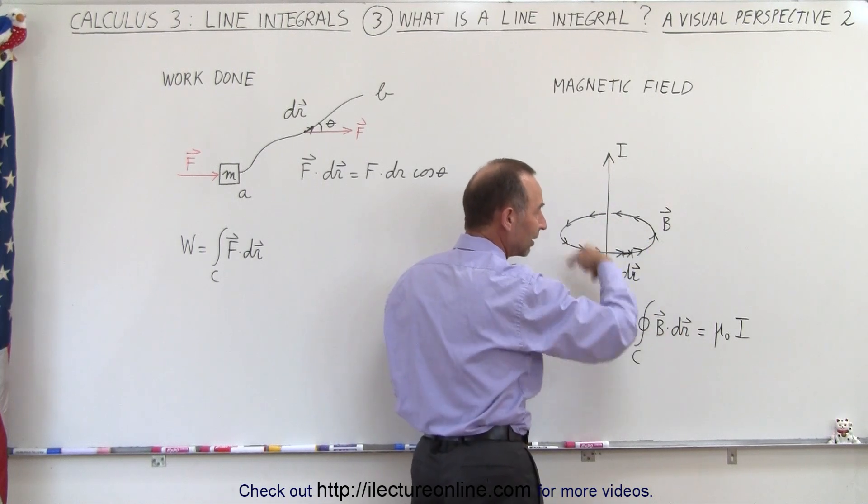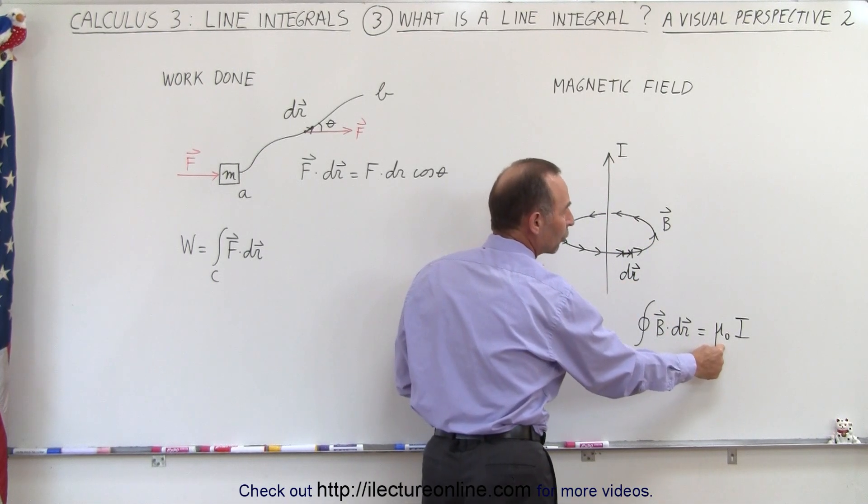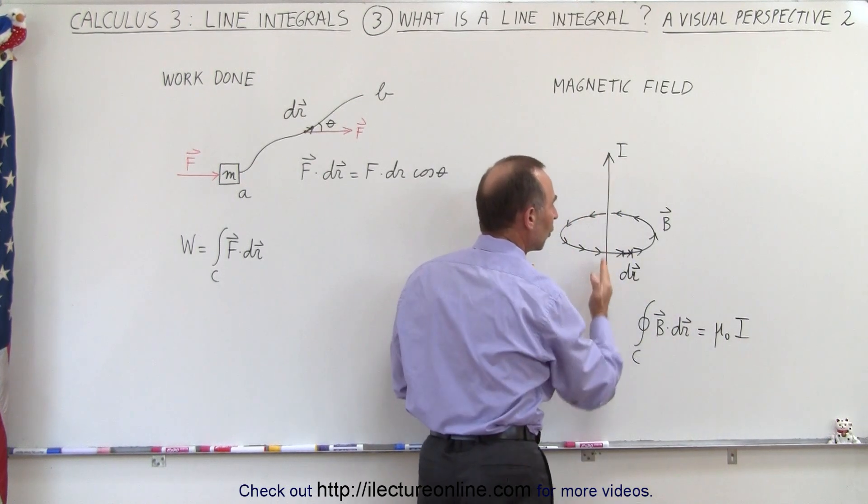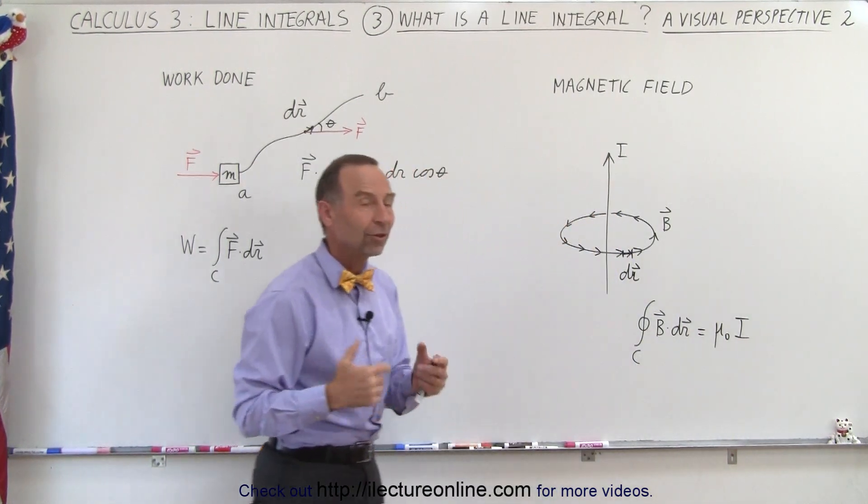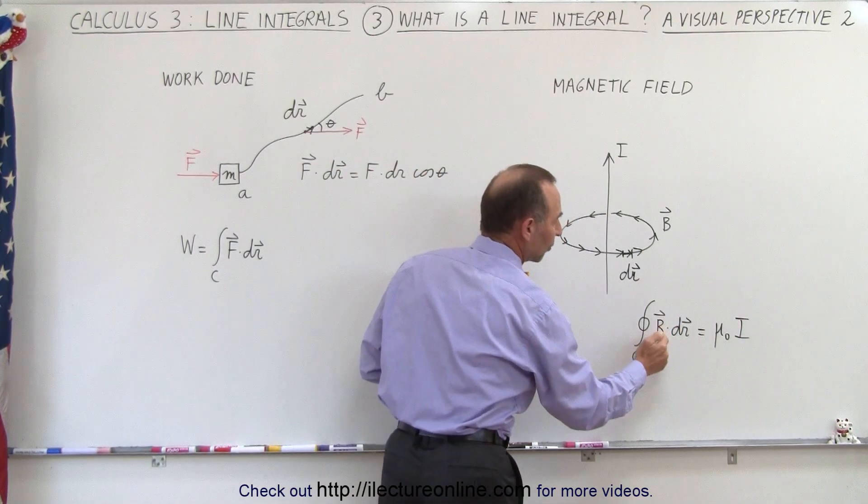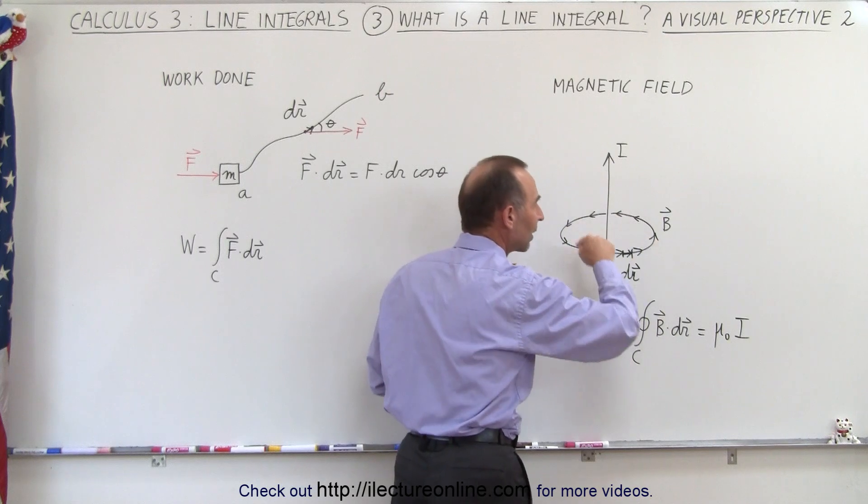If we add all that together, that equals the permeability of free space times the current through the wire. You can see there's a relationship between the strength of the current and the strength of the magnetic field based on that line integral.